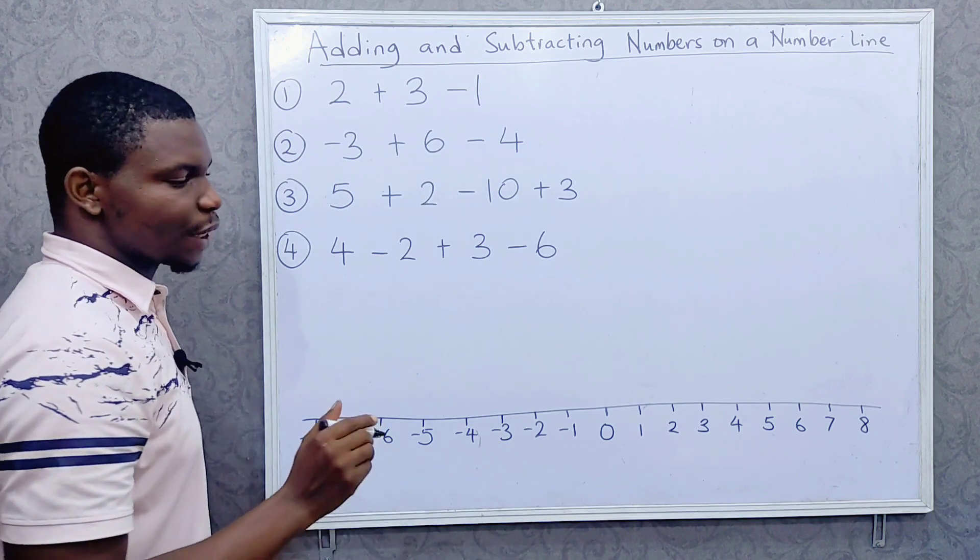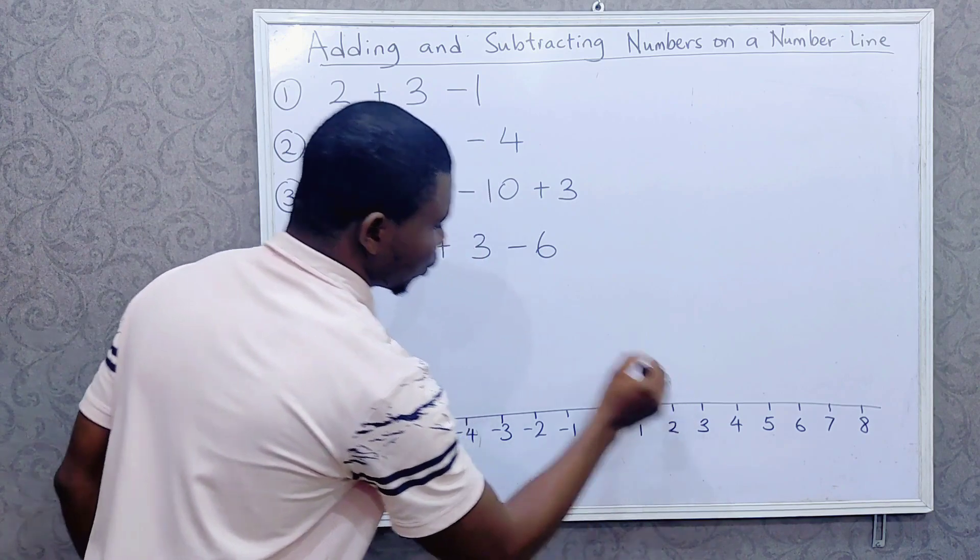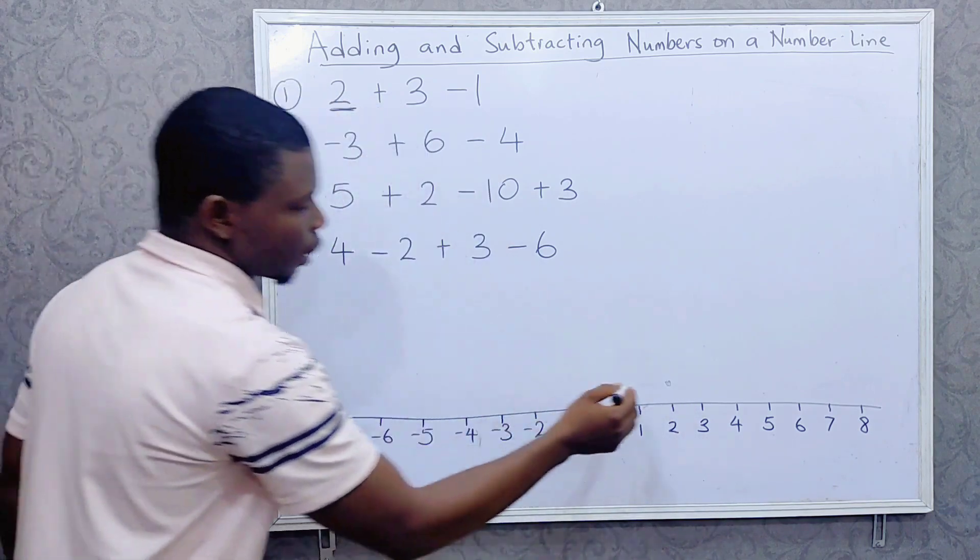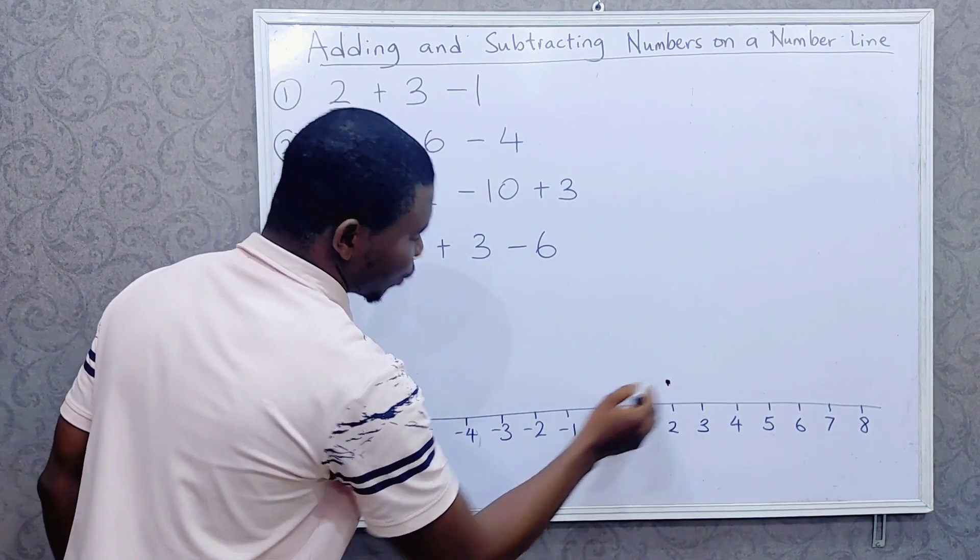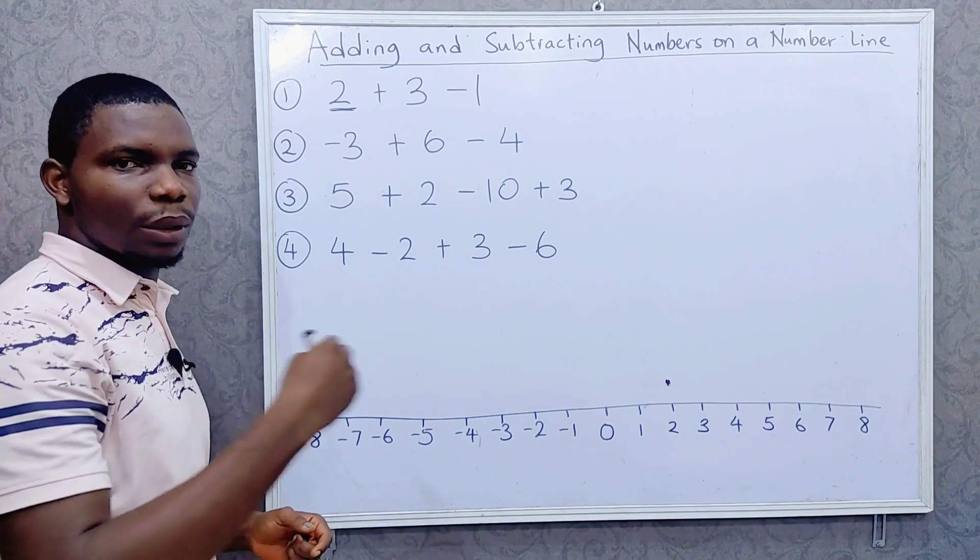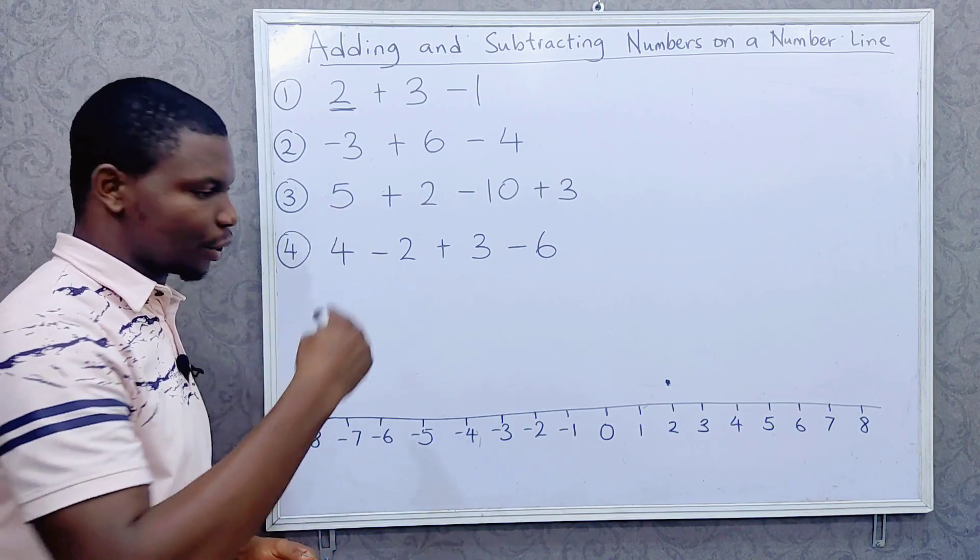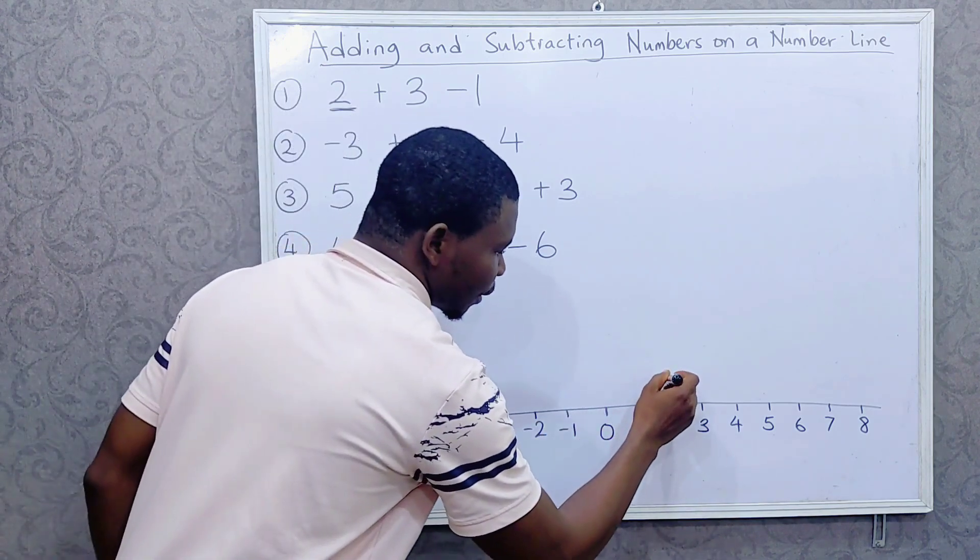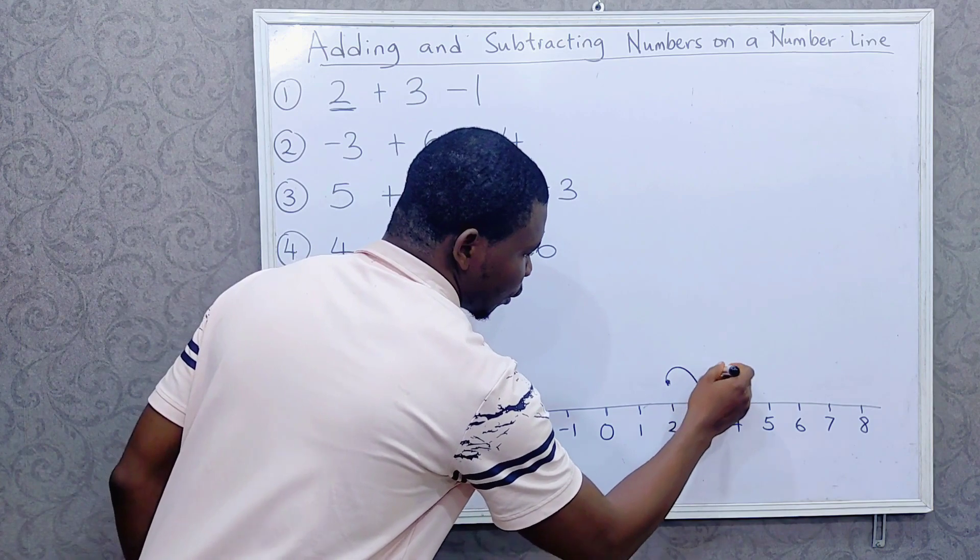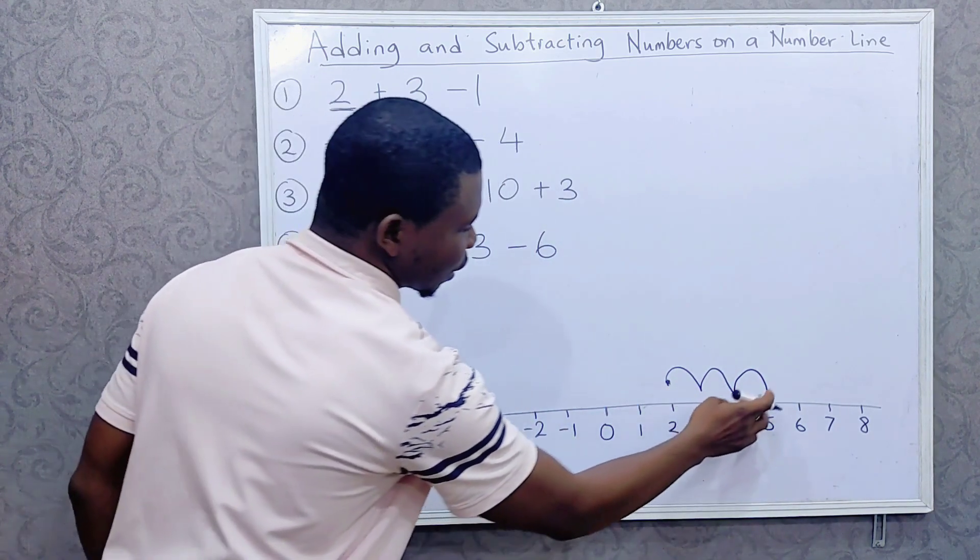We are going to start at 2, positive 2. Then plus 3. Plus 3 means you go forward, you go to the right 3 times. So let's go to the right 3 times: 1, 2, 3. So it means that 2 plus 3 is 5.